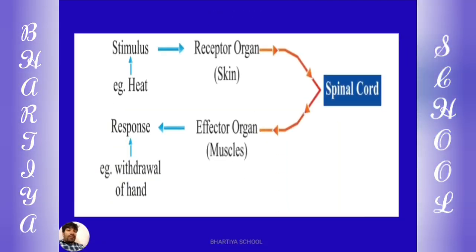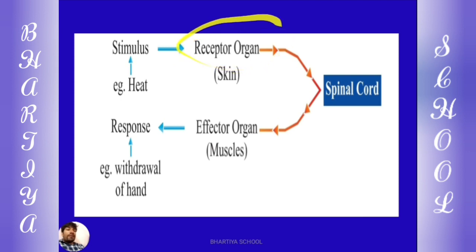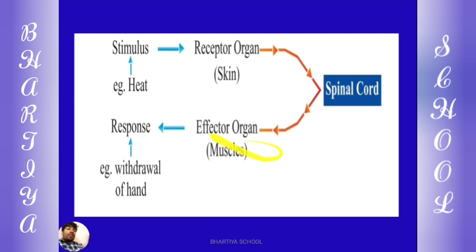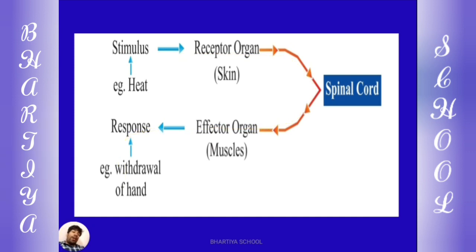Reflex arc diagram में देखें: stimulus जैसे heat या कोई hot object — वो हमारा stimulus था। Receptor organ यानि जो हमारी skin है वो उसे receive करेगी और sensory nerves के through spinal cord के पास पहुँचाएगी। Spinal cord से message effector organ यानि हमारी muscles के पास convey होगा और response होगा — हम हाथ वहाँ से हटा लेते हैं। यह पूरा pathway reflex arc कहलाता है और hot object को touch करके हाथ हटाने का पूरा action reflex action कहलाता है।